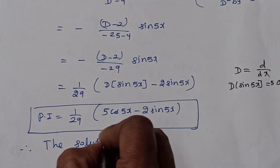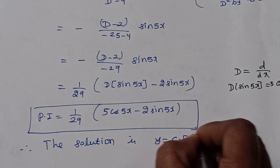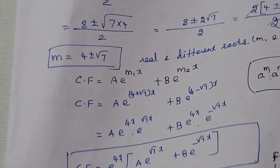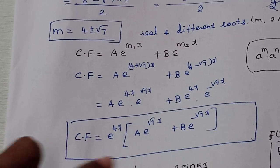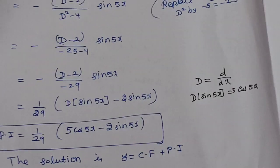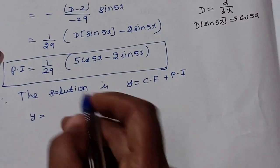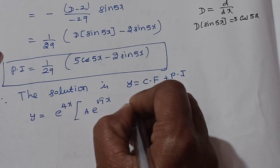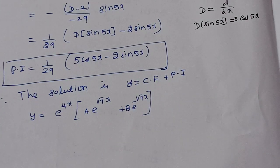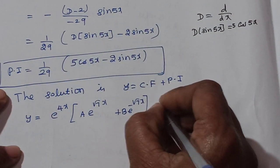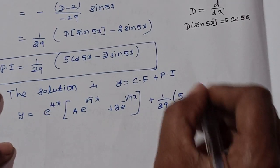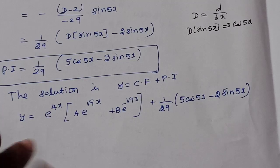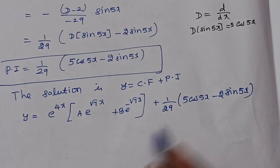The complete solution is y equals complementary function plus particular integral. Therefore y equals e^(4x) times [A·e^(√7·x) plus B·e^(−√7·x)], plus (1/29)[5 cos 5x minus 2 sin 5x]. This second order differential equation has 2 arbitrary constants A and B. The dependent variable y is expressed as a function of the independent variable x.